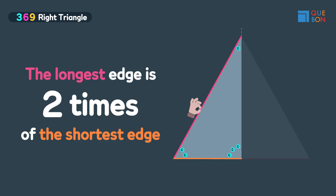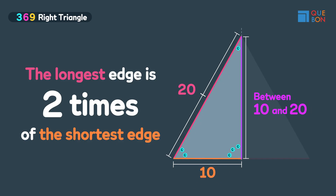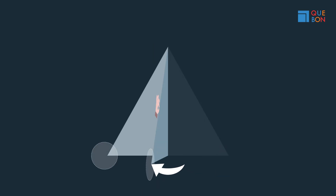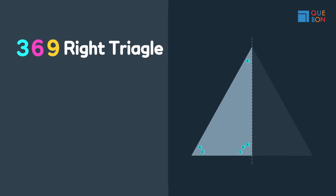We know that the longest edge — the hypotenuse — is two times as long as the shortest edge, which is the edge facing 30 degrees. It's because we folded it in half. So if the short length is 1 and the hypotenuse is 2, then the length of the remaining edge should be between 1 and 2. We'll learn more about this height a little later.